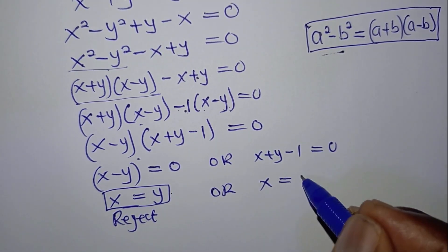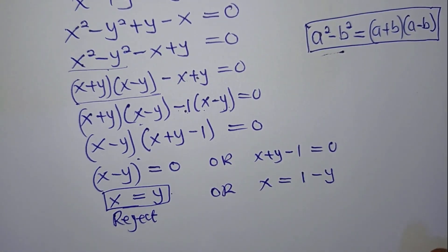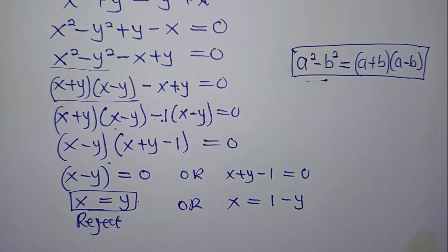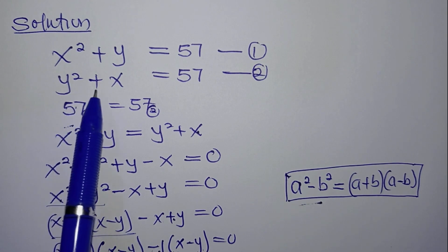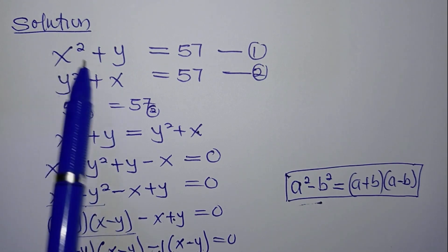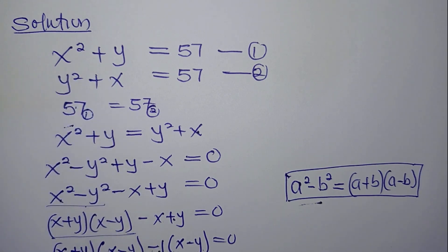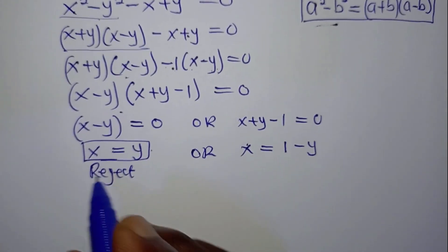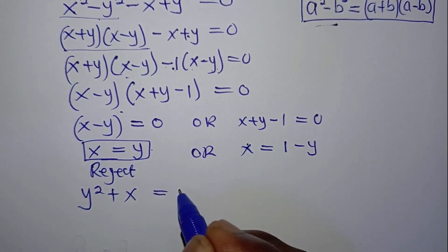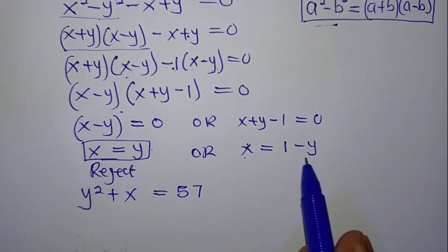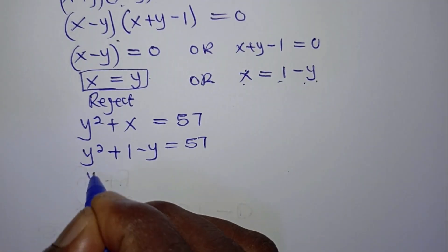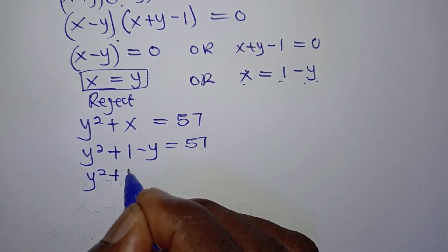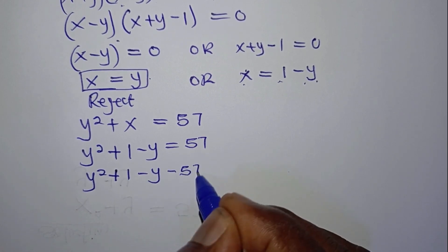From the second factor, x plus y minus one equals zero gives us x equals one minus y. So this condition can be accepted. We are going to substitute x equals one minus y into equation 2. In equation 2 we have y squared plus x equals 57. Substituting, we get y squared plus (1 minus y) equals 57.